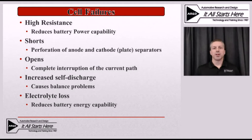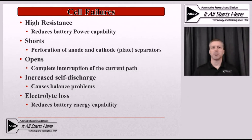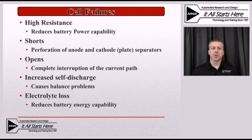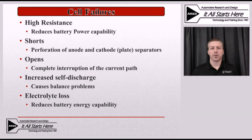We also have increased self-discharge rate. Nickel metal hydride batteries already have a very high self-discharge rate to begin with. Over time, internal cell structure changes can apply pressure to the separator plate between the positive and negative electrodes, causing that self-discharge rate to increase. If the self-discharge rate increases on some modules more than others, the result is an imbalanced battery pack — as the vehicle sits overnight or for extended periods, say a week while someone's on vacation, the module with the higher self-discharge rate will drop much lower than the rest of the pack and trigger an imbalance code.